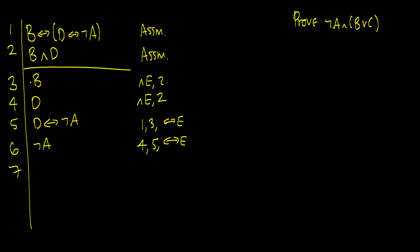How do we do that? Well, we'll take a look at line number three where we have B, and we can use OR introduction to get B or C, because that is a rule and we are allowed to do that. And now on line eight, we can conjoin the two using AND introduction. So we get not A and B or C. So this is lines six and seven with AND introduction.